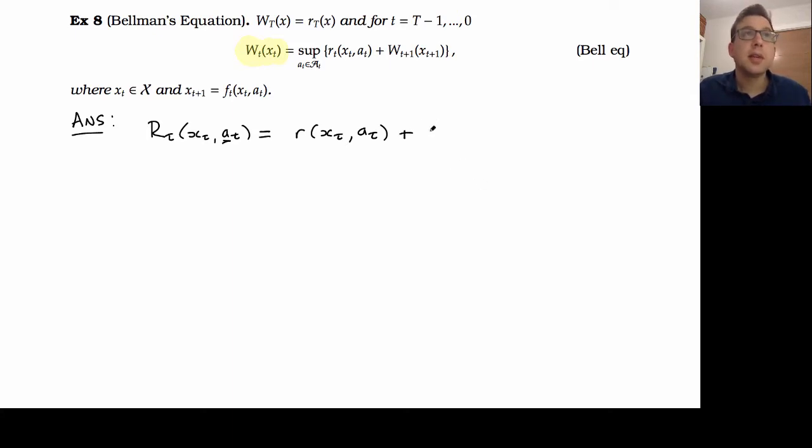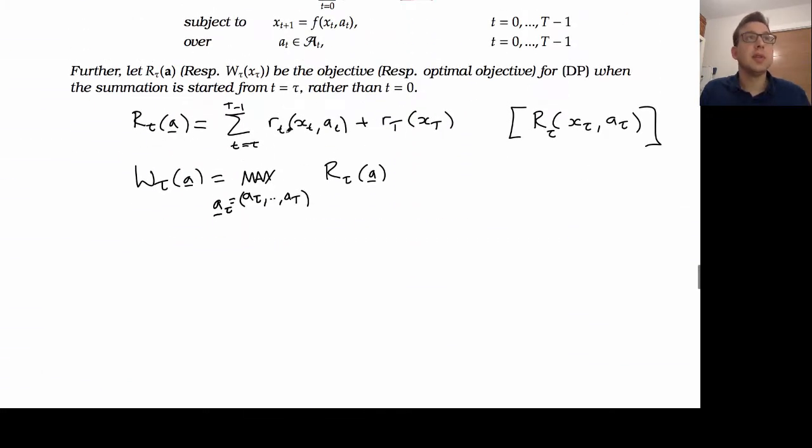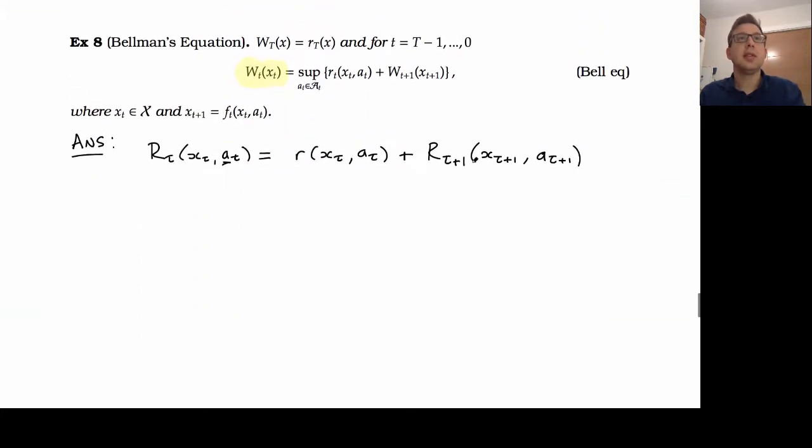So this is because we notice this, we can split this sum into two parts. We just include one term in this sum. And then what we've got left is r of tau plus one.